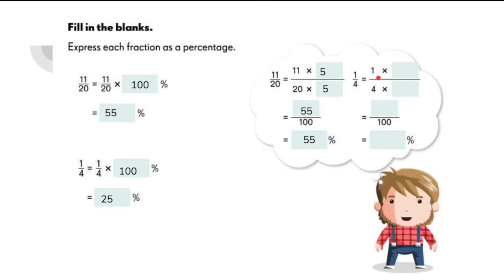What about here? 1 fourth? Let's express this with the denominator of 100. We just need to multiply 4 by 25, 1 by 25, and this will give us 25 over 100 or 25%.